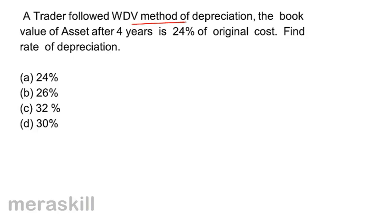The value after 4 years is 24% of the original cost. We can use the formula: Future Value = Present Value × (1 − i)^N, where i is the rate of depreciation and N is the number of years.